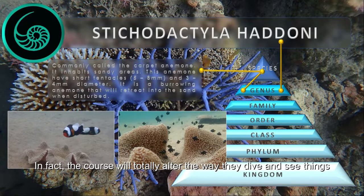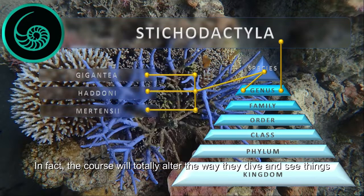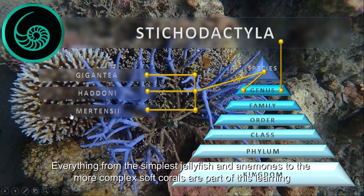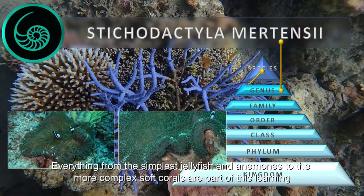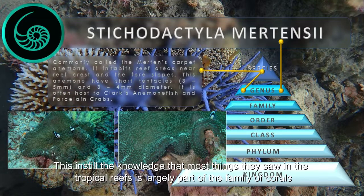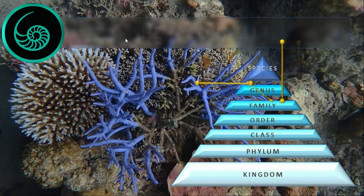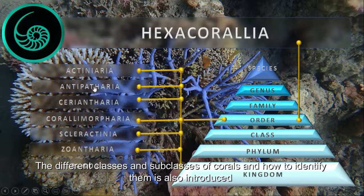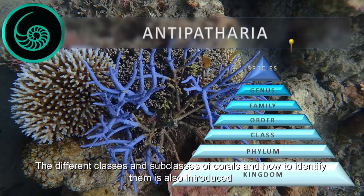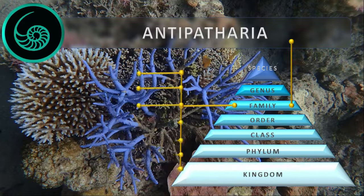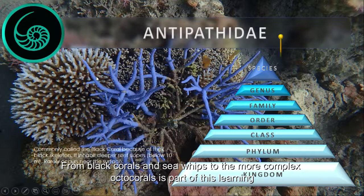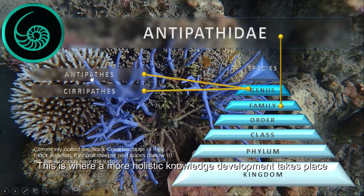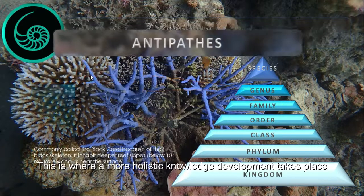In fact, the course will totally alter the way they dive and see things. Everything from the simplest jellyfish and anemones to the more complex soft corals are part of this learning. This instills the knowledge that most things they see on tropical reefs are largely part of the family of corals. The different classes and subclasses of corals and how to identify them is also introduced, from black corals and sea whips to the more complex octocorals.